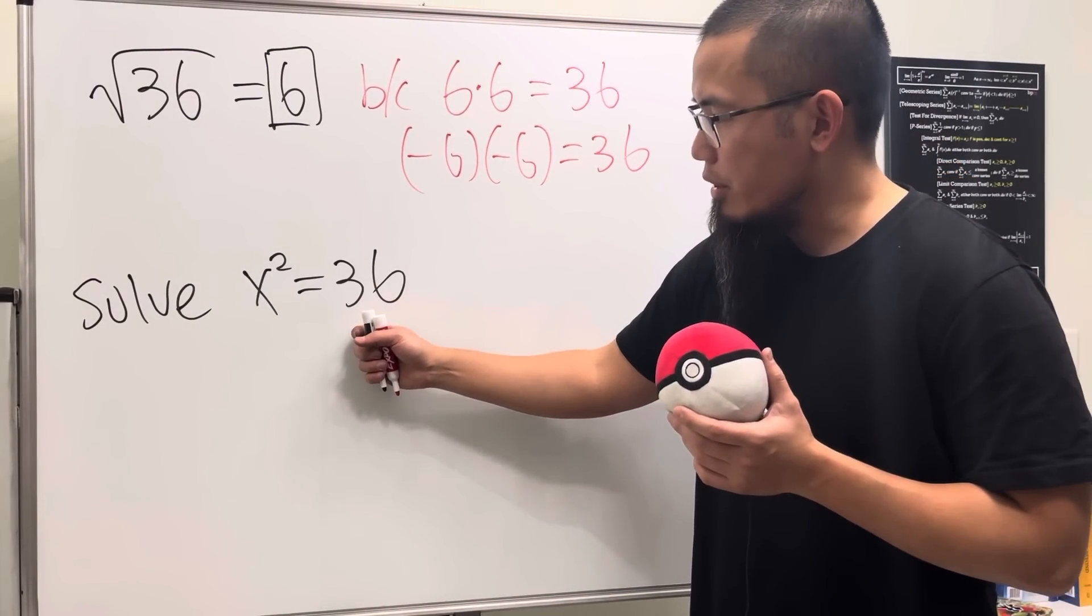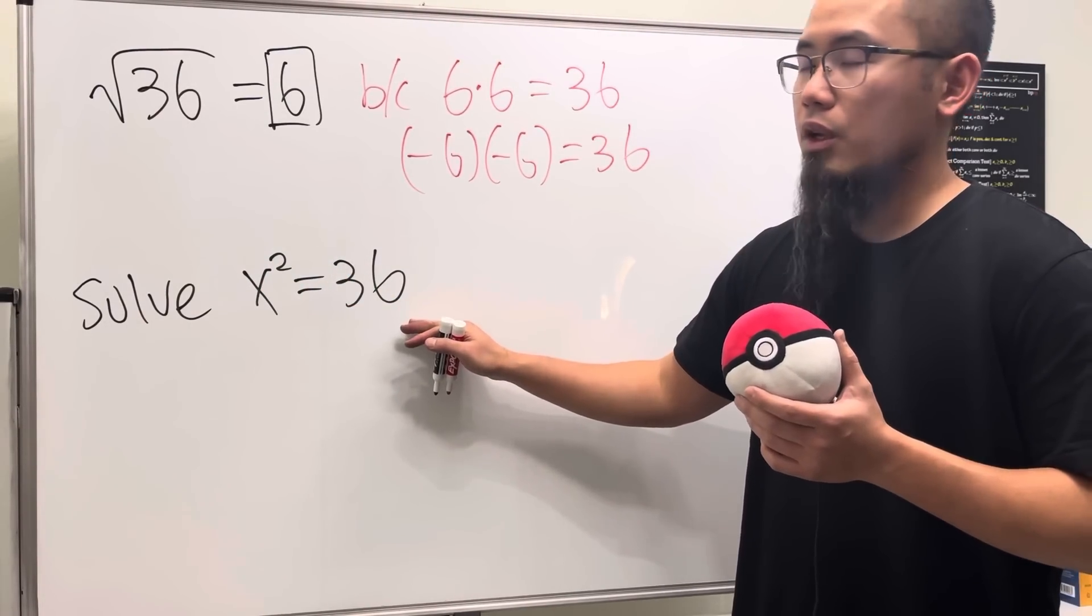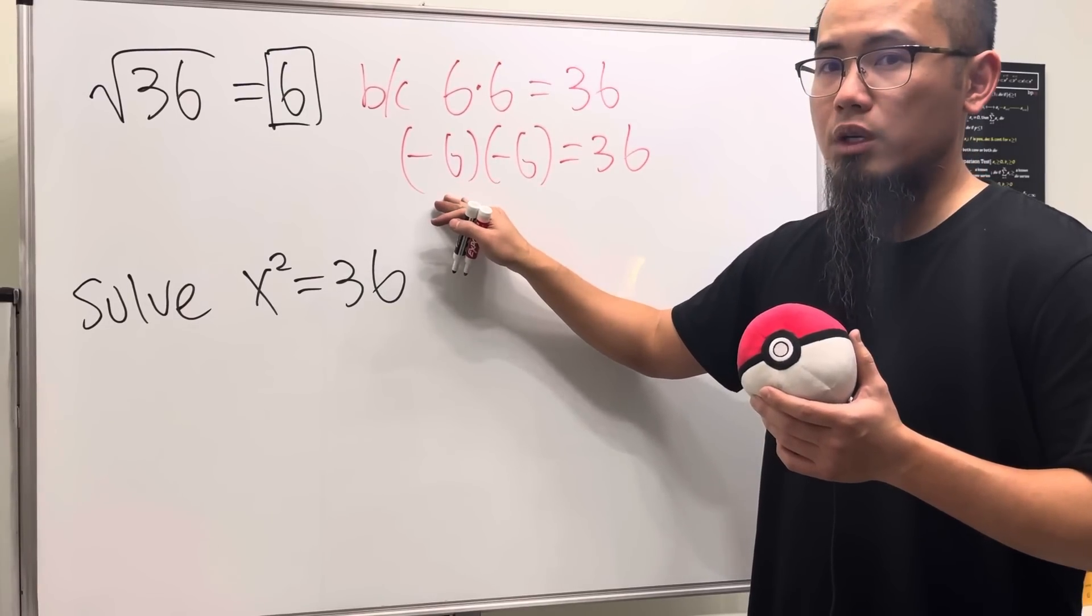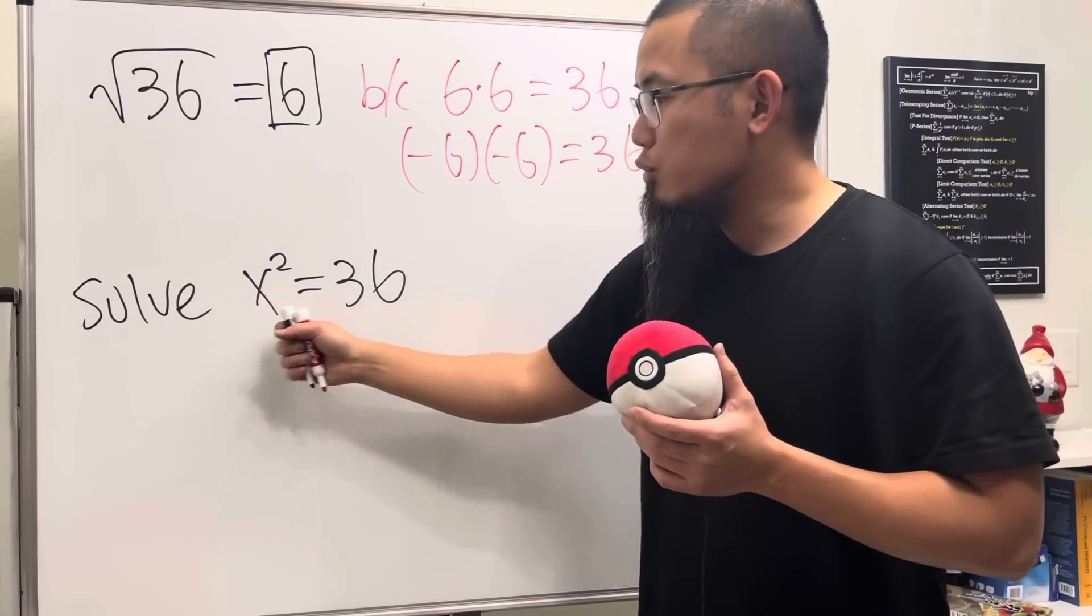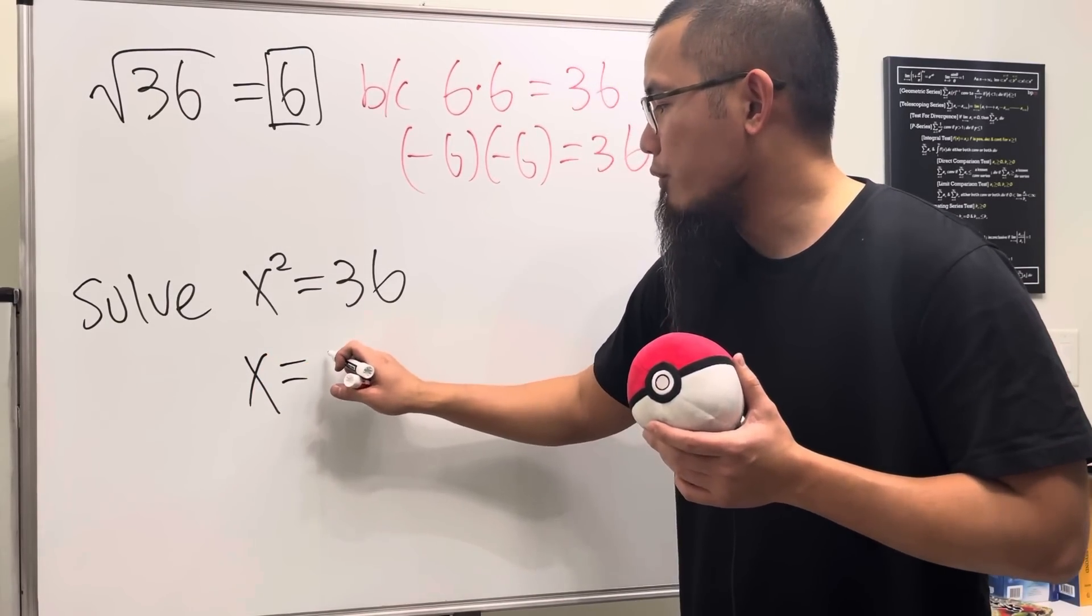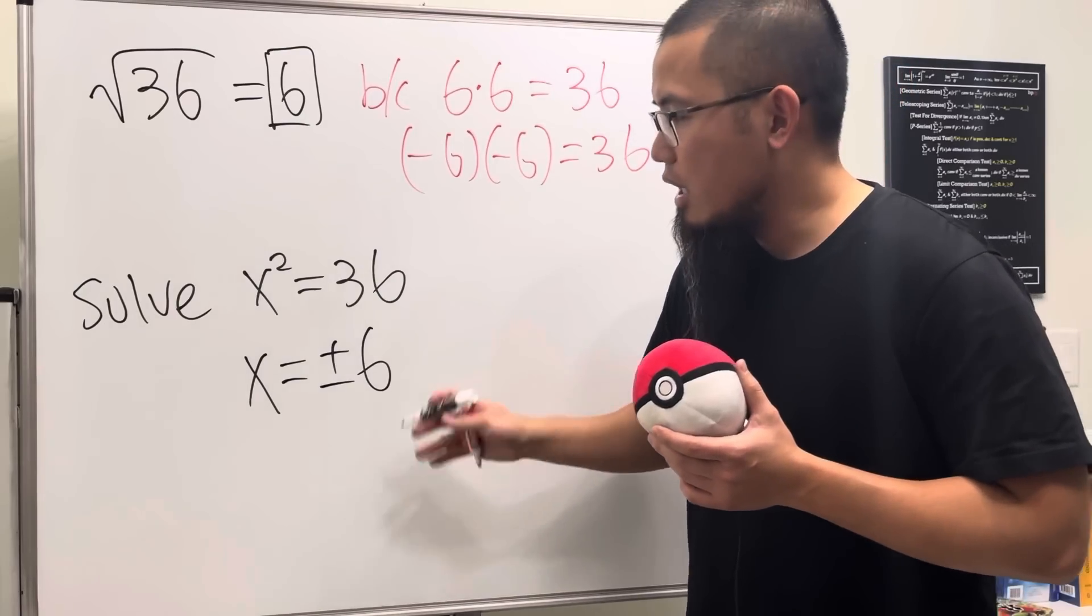So, if you look at this right here, you have to ask yourself, what square will give you 36? We know 6 will work. But also, negative 6 will work. If you have this right here for the question, the answer will be x equals both positive 6 and also negative 6. Here we have two answers.